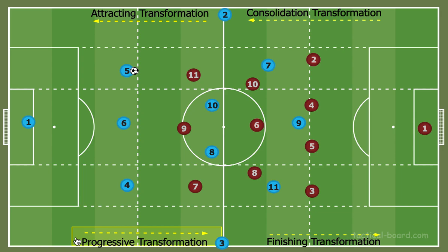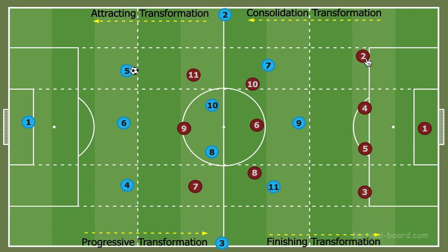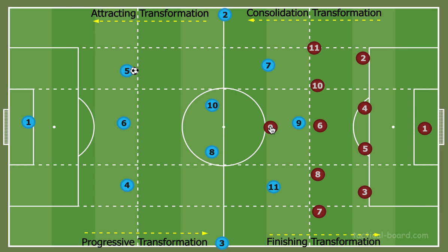I didn't want to use the term 'transition' because that's widely accepted as losing or regaining possession, so I used 'transformation' instead. Now, the finishing transformation — it's self-explanatory because the end goal is to create chances and score. Our defense will see a structural transformation to a 4-5-1. From the offensive team's side, our wingers will now become wide players — I'll highlight the transformation just to make it clear.